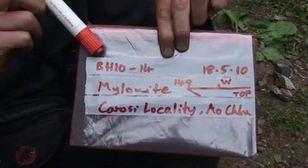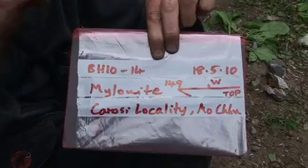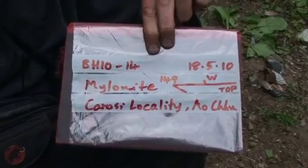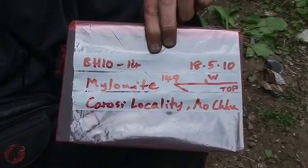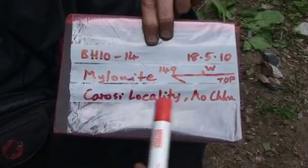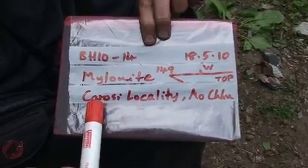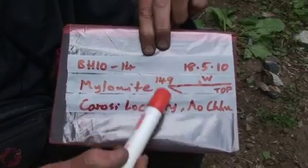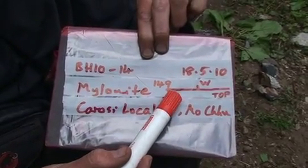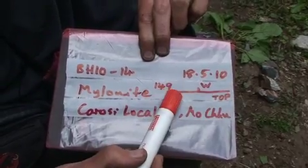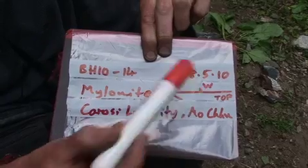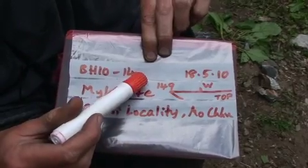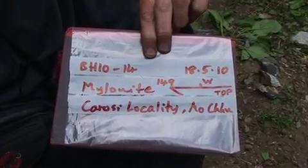Up here is the sample number, which in this case is exactly the same as the locality number. This is the date it was collected. This is the name of the rock — Mylonite — which simply means a very sheared rock. Down here is the name of the locality, and this is the particular geologist who identified this rock originally, and the river valley we're in. But most importantly, you've got the structural information here that we've penned on top of the sample: the plunge of the lineation, the arrow to 149, the west and tick, and the top mark as well. So that is duplicated both on the bag, on the rock specimen itself, and in my notebook as well.